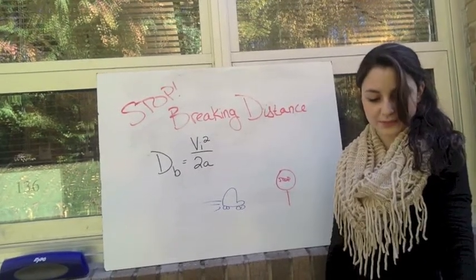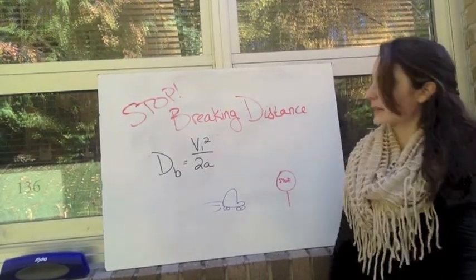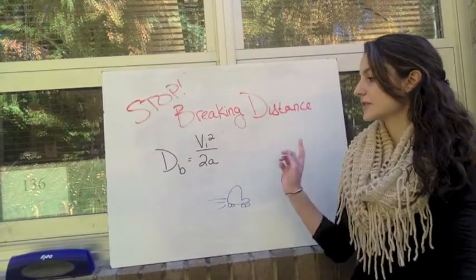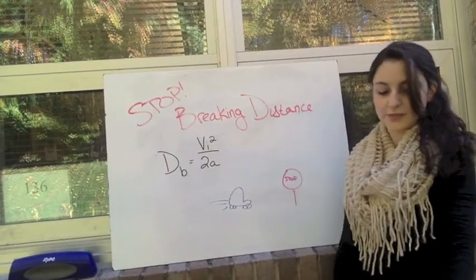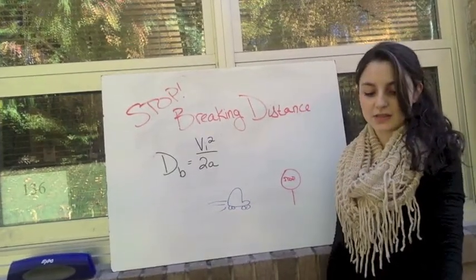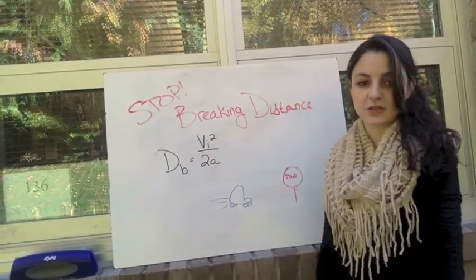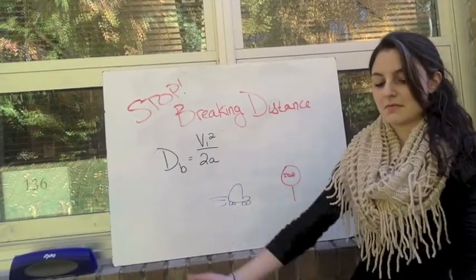Here's the reason why. To find braking distance, the formula is distance equals the initial speed squared over 2 times the acceleration. In other words, if you double your initial speed, it means that the stopping distance increases exponentially.